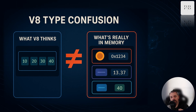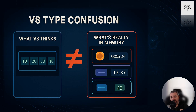This is how heap metadata gets corrupted. It's how an attacker can forge objects, rewrite pointers, and ultimately execute their own code inside the renderer. And once you have arbitrary code execution inside the renderer, you are basically one step away from escaping the sandbox altogether.